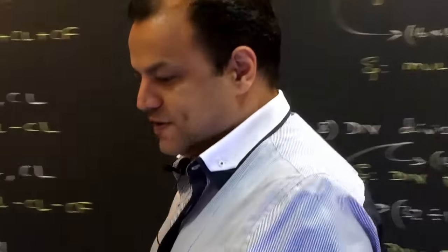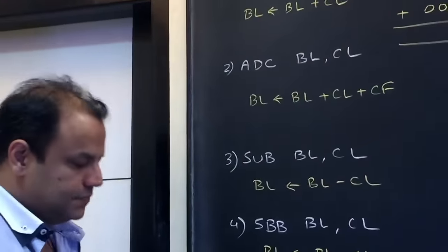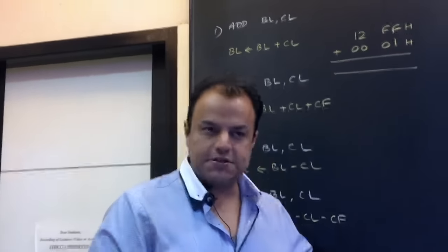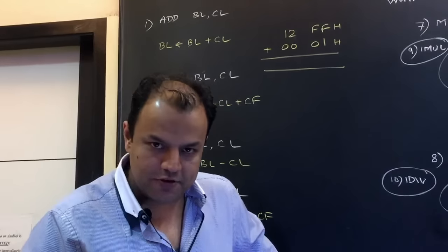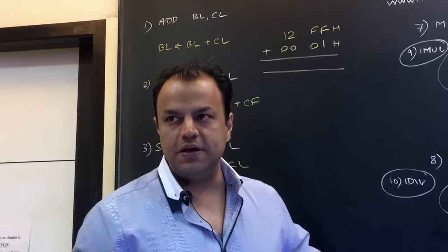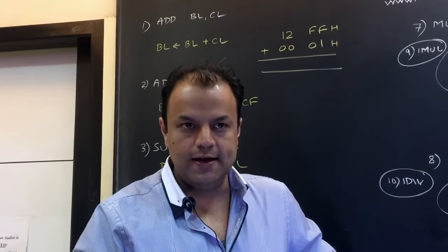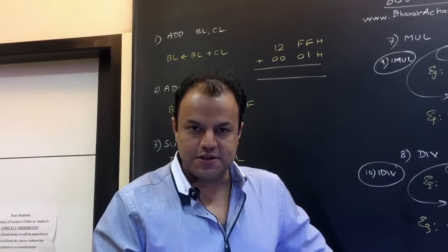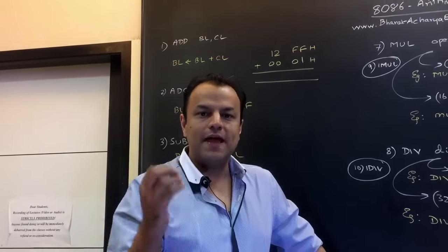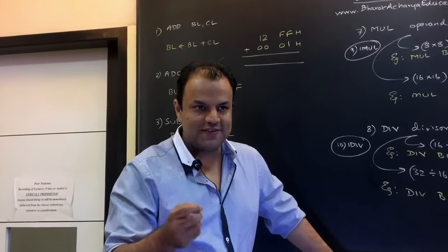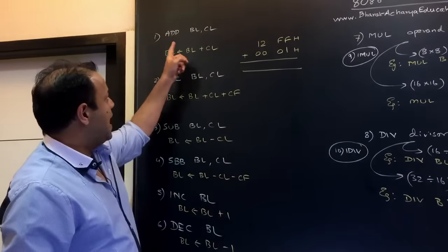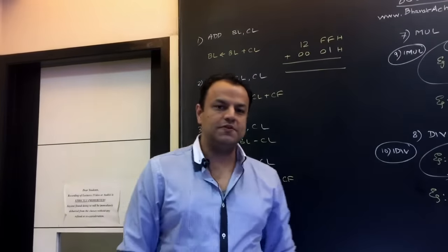So the first instruction: add. Now before seeing these instructions, I'm sure you've seen architecture, you know which registers and how many bit registers. So just to give you a brief: AL, DL, CL, DL and AH, BH, CH, DH are 8-bit registers. And they're combined together, used as 16-bit registers by the names AX, BX, CX, DX. Now our first instruction: add BL, CL.